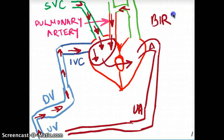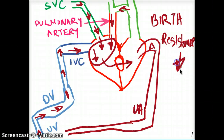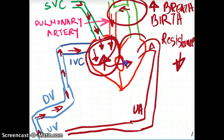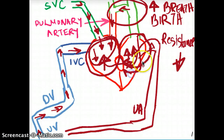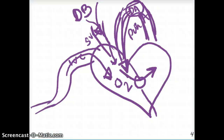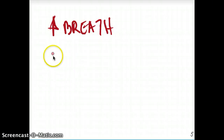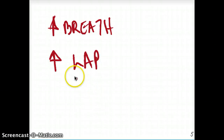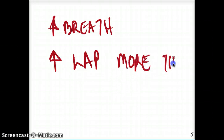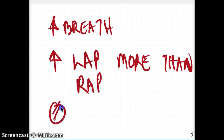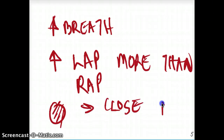At birth, what happens is the resistance in the lungs decreases because the baby takes a huge breath. This causes left atrial pressure to increase much more than right atrial pressure. That increased pressure pushes against the foramen ovale, closing it. So at birth, the baby takes a large breath, left atrial pressure exceeds right atrial pressure, and that seals and closes the foramen ovale.